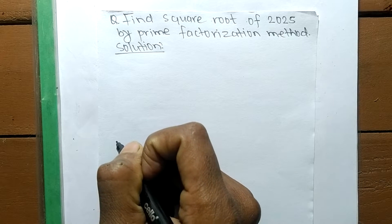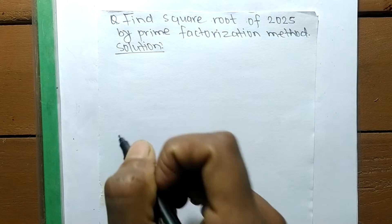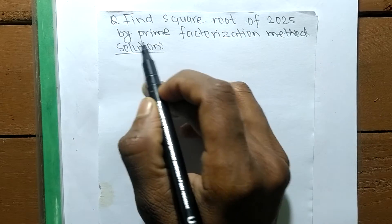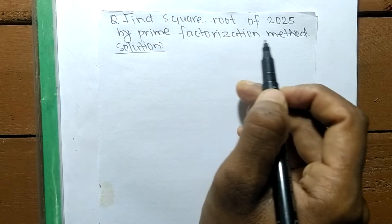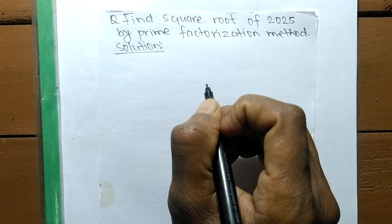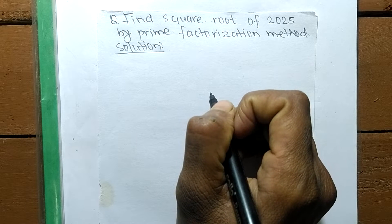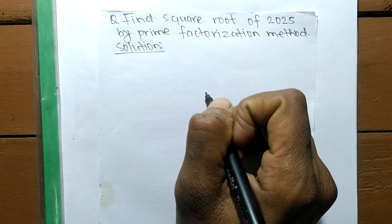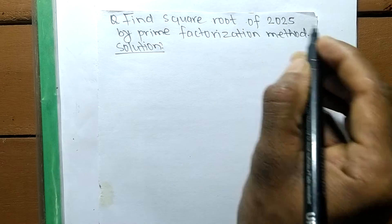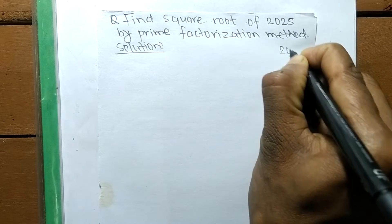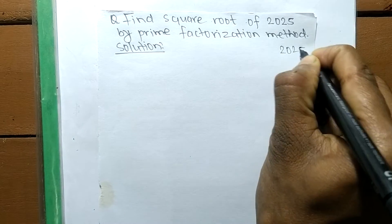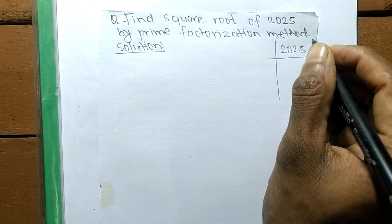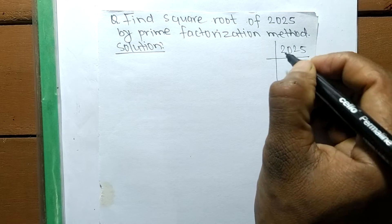Today in this video we shall learn to find the square root of 2025 by prime factorization method. To find the square root by prime factorization method, first we have to find out the prime factors of the given number 2025.